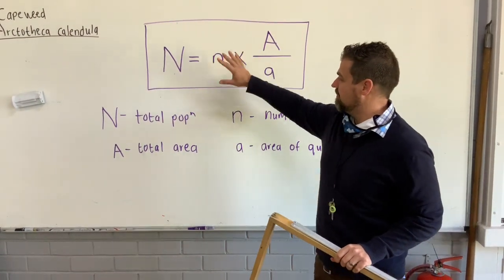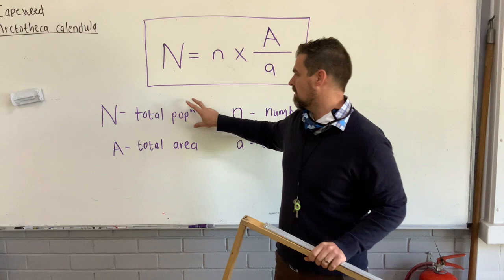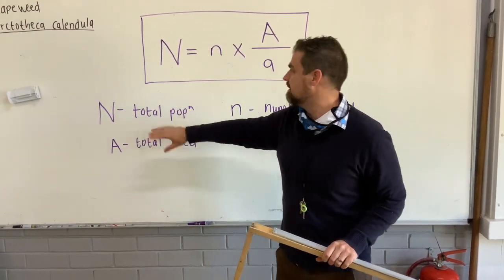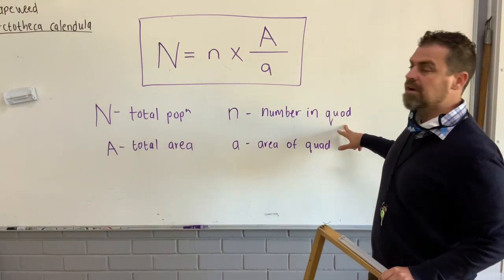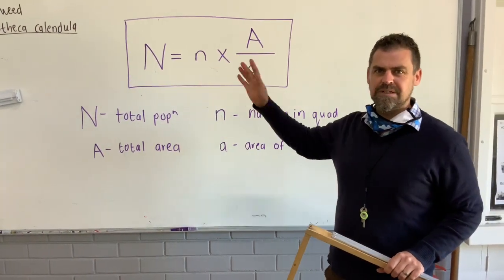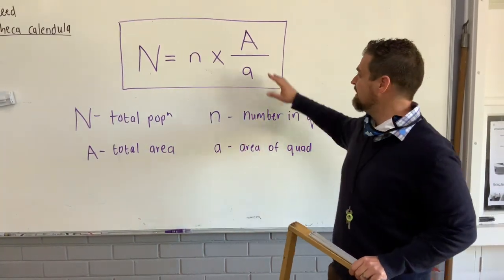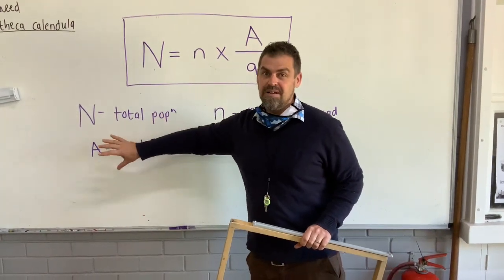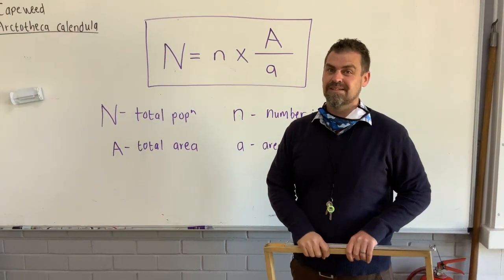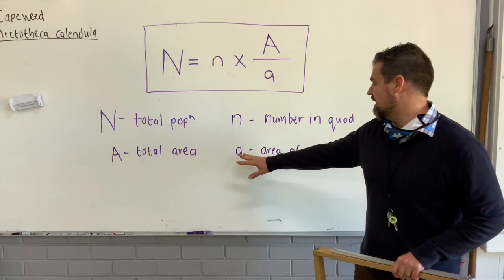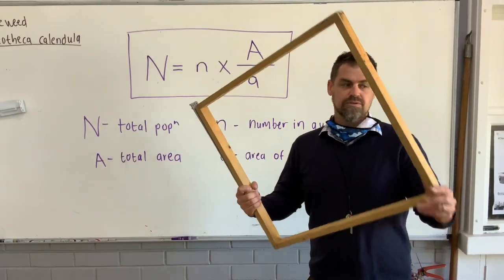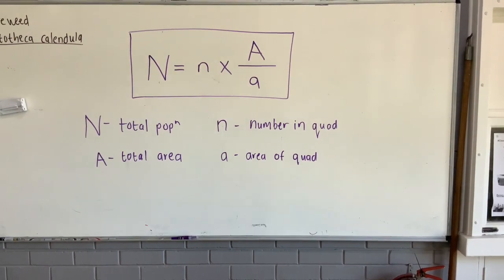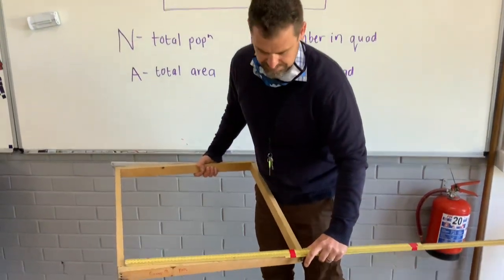And the formula is really great, very simple. N is the total population, that's what we're trying to find out. little n is standing for the number in the quad that we count or the average number if we've done many multiple quads. A is the total area, that's going to take some looking up. and little a is the area of the quad that you can just use a ruler for and measure how big your quad is.